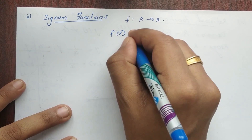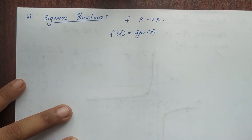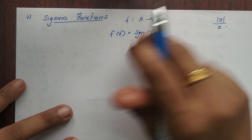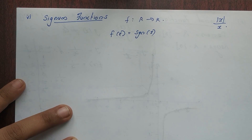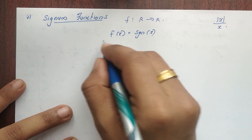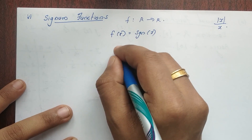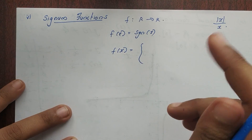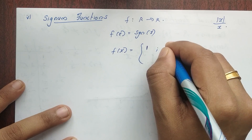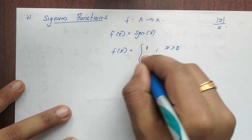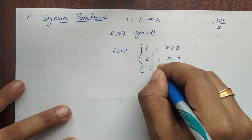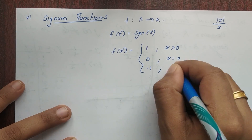f of x is equal to signum x. Signum x is modulus x divided by x. The definition is f of x is equal to signum x. Where f of x equals 1 if x is greater than 0, 0 if x is equal to 0, and minus 1 if x is less than 0.